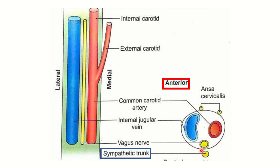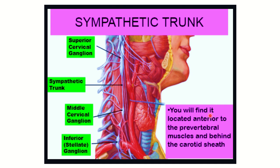At this level of the sixth cervical vertebra, we can see the sympathetic chain here. The carotid sheath lies around the common carotid artery, and just behind the carotid sheath is the sympathetic trunk. We can see the superior cervical ganglia, middle cervical, and inferior cervical ganglia along the line of the sympathetic trunk. The sixth cervical vertebra is located in this area.